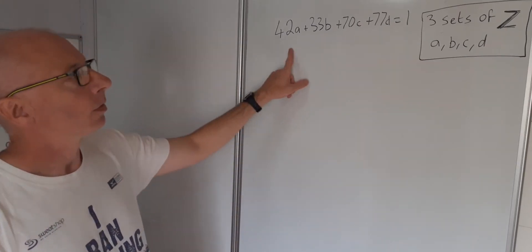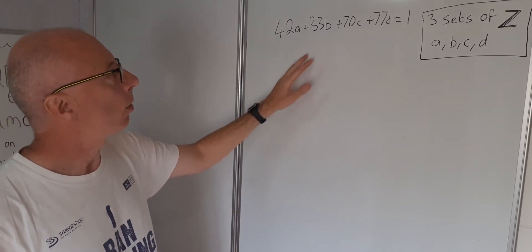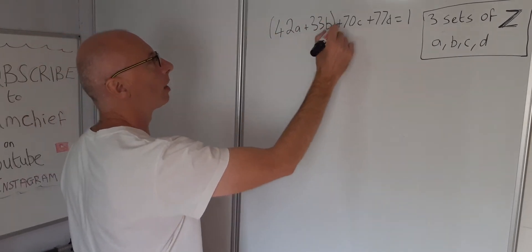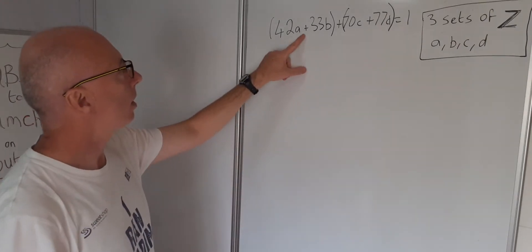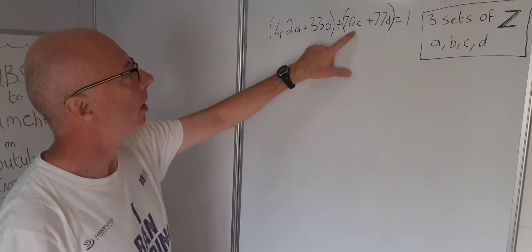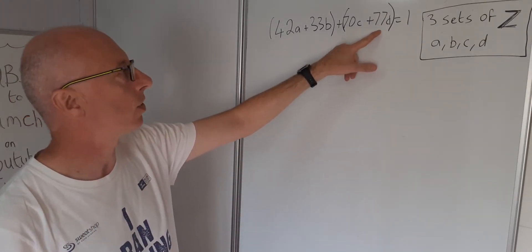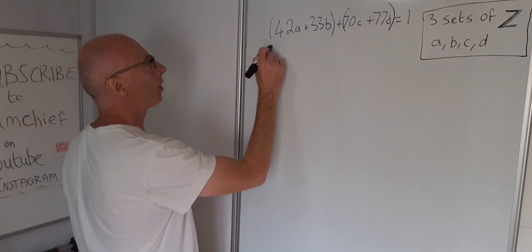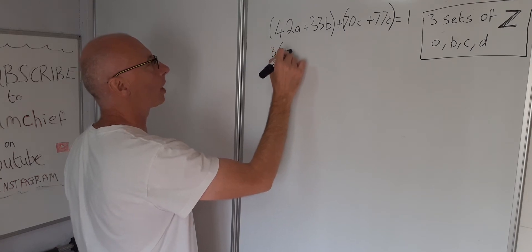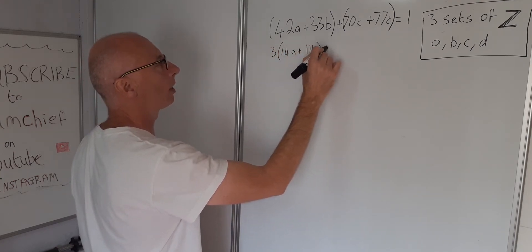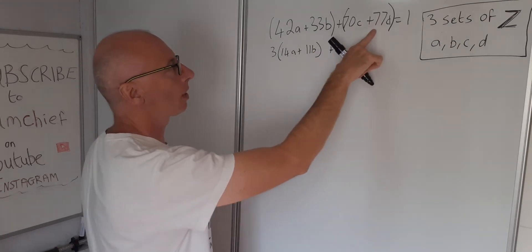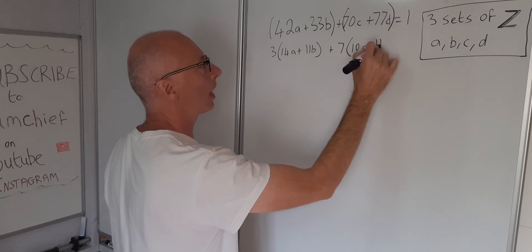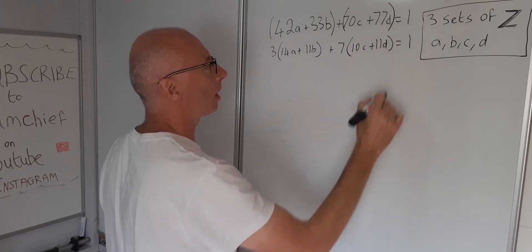First, we need to find three sets. What we do first is pair these up, because 42A + 33B has a common factor of 3, and 70C + 77D has a common factor of 7. Taking those out gives us 3(14A + 11B) + 7(10C + 11D) = 1.